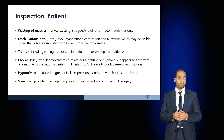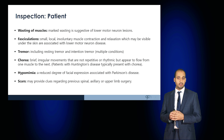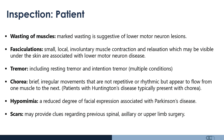Fasciculations are small local involuntary contractions and relaxations visible under the skin, associated with lower motor neuron conditions. A tremor may be present at rest or as an intention tremor during purposeful movement. Choreiform movements are brief irregular movements that flow from one muscle group to the next, seen in Huntington's disease. Hypomimia is reduced facial expression associated with Parkinson's disease. Also observe for any scars which may provide a clue of previous spinal, axillary or limb surgery.